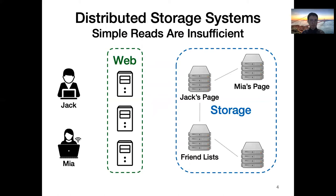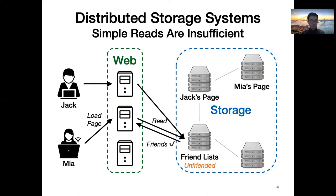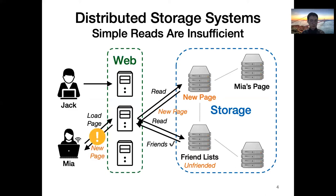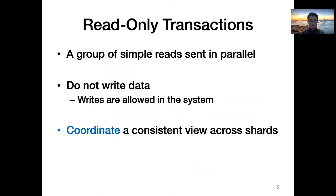However, simple reads are insufficient in a distributed setting. For instance, when Mia checks out her friend Jack's page, she needs to check if they are still friends, and the answer is yes. Suppose at the same time, Jack unfriends Mia and uploads a new page that is only visible to his friends. After Jack's updates, Mia's read-page request arrives at the server and returns the new page. Because Mia's two reads arrive at different servers at different times, these simple reads cannot prevent Mia from seeing Jack's new page. Therefore, we need read-only transactions.